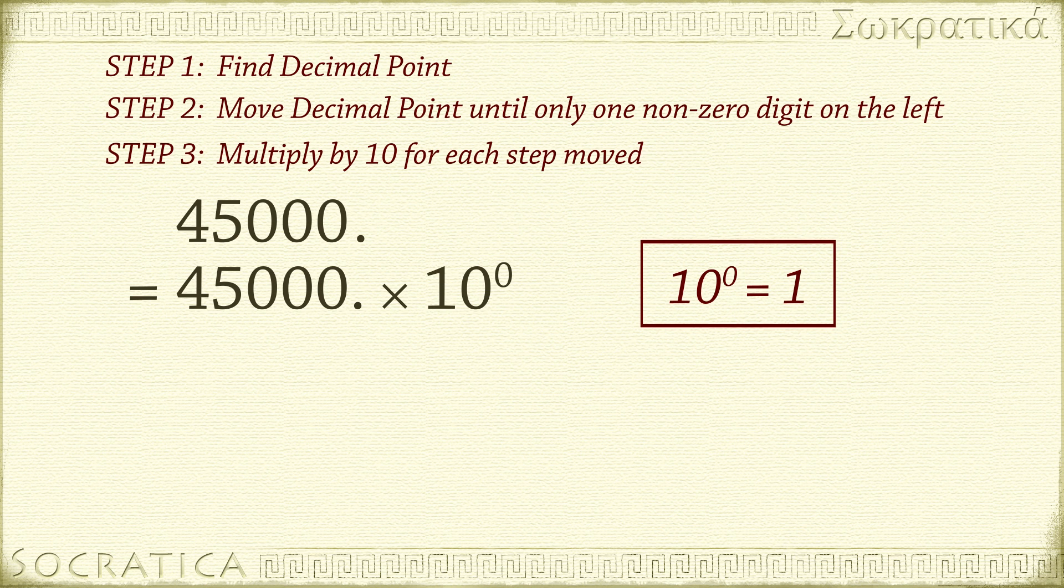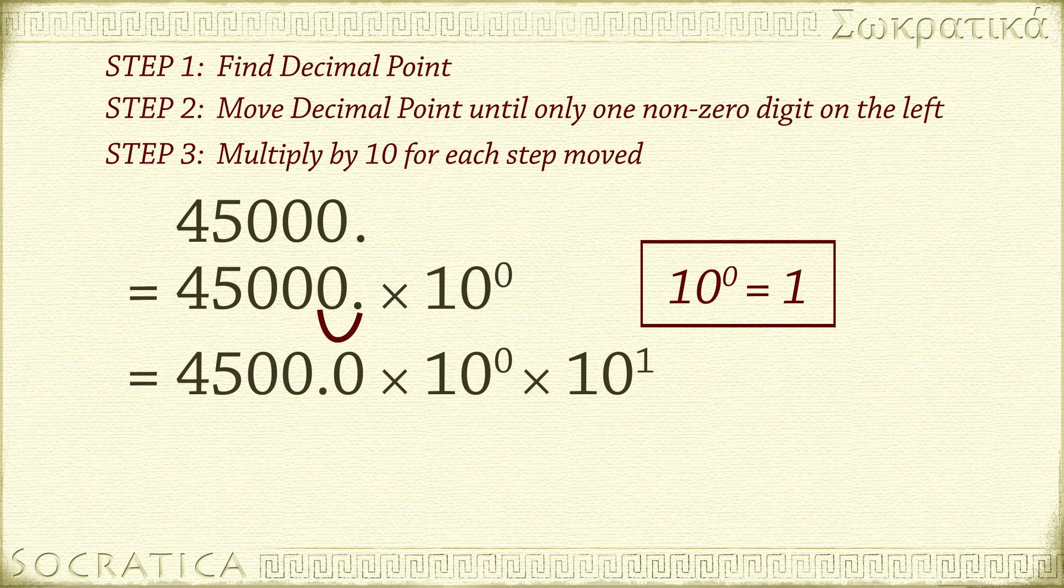If we move the decimal one place to the left, we now have 4500.0. That's a different number. 4500 is much less than 45,000. 10 times less. By moving the decimal point one step to the left, we divided 45,000 by 10. So to cancel the effect of moving the decimal, we need to multiply by 10. So it's like 4500.0 times 10 to the zero times 10 to the one equals 4500.0 times 10 to the one.